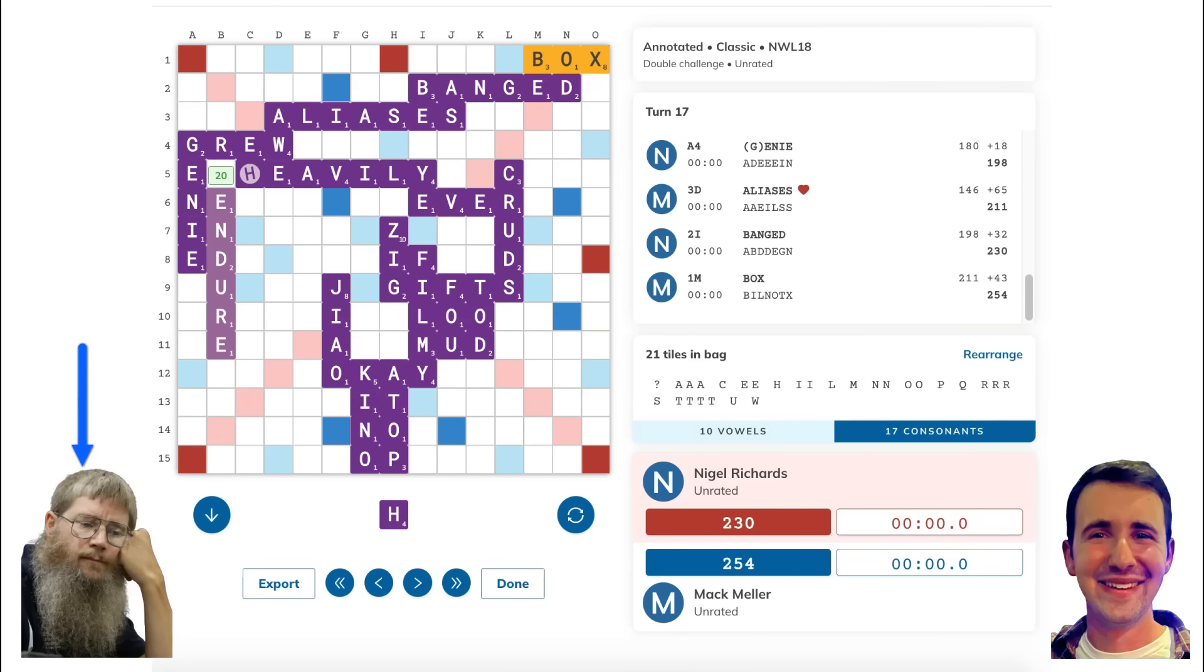Instead of trying to bingo, he completely blew his rack up by playing ENDURE down the B column for 20 points, keeping just the H. Now, this is a truly fascinating play to try to comprehend because, as I said, it's so counterintuitive. Nigel is at a deficit, but despite that, he's getting rid of all of his best bingo tiles for just 20 points and also giving me a potentially large scoring play down the A column next to the second E in ENDURE if I can play a five-letter word reaching the bottom left corner triple word score. So what is Nigel's idea with this play?